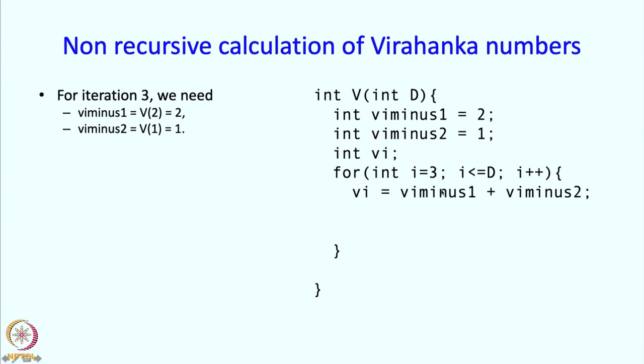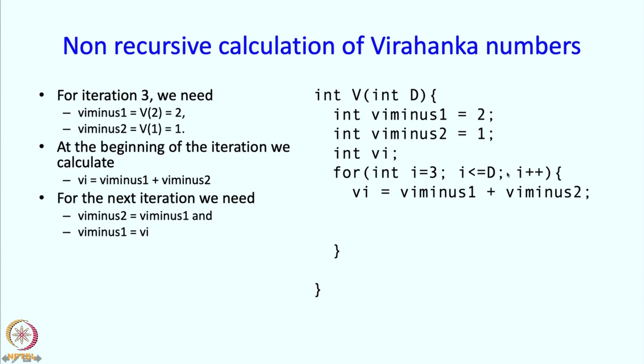And then when we go to the next iteration of the loop, what happens? First of all, in this iteration what happens? At the beginning we calculate this, which is as per the plan we were talking about on the last slide. And then we have to prepare for the next iteration. So for the next iteration, what is it that we want? Well, the value that was Vi-1 in the current iteration is the value calculated in the previous iteration.